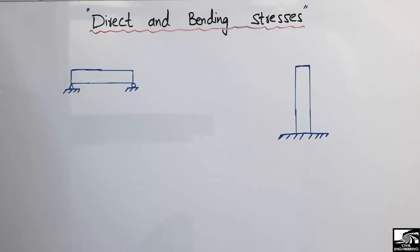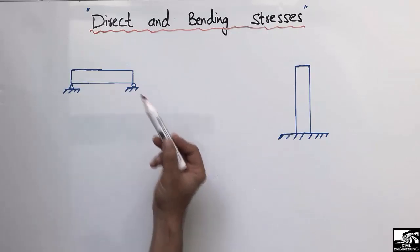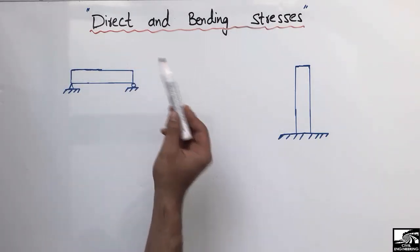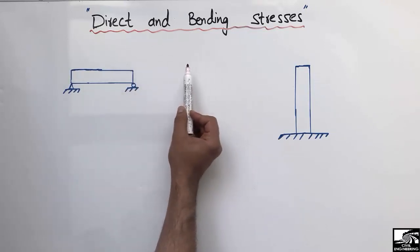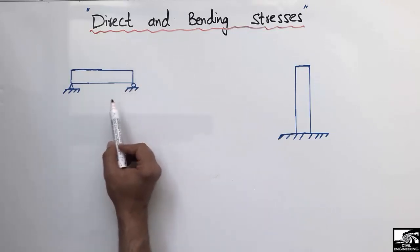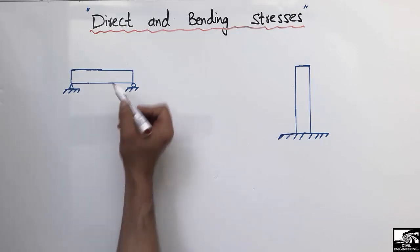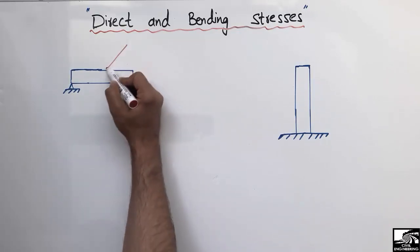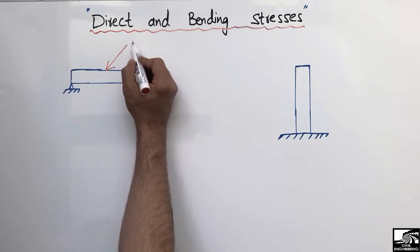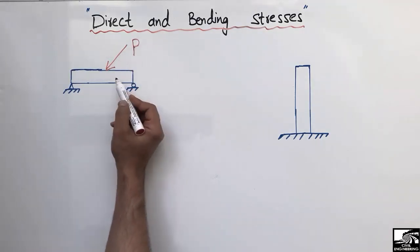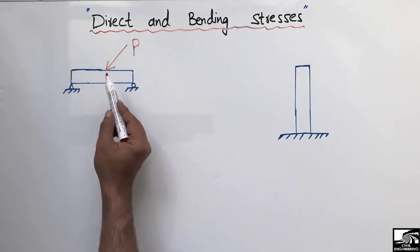Hello guys, welcome back to the A7 Engineering YouTube channel. Please subscribe for daily engineering videos. Today our lecture is about the difference between direct and bending stresses. I will explain this difference between these two types of stresses with the help of examples. Let's consider a simply supported beam subjected to an inclined load P.